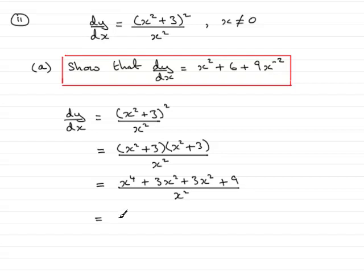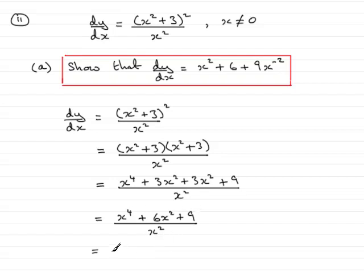Cleaning this up, on the top we get x⁴. We have a couple of 3x² terms, so that's 6x², plus the 9 on the end, all divided by x².